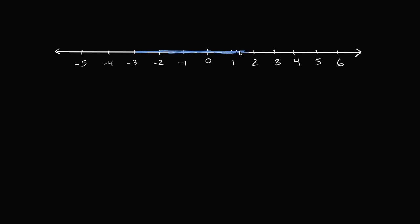In order to be more precise, I have to be clear: am I including negative three and two, or am I not including them, or maybe just including one of them? If I'm including negative three and two, then I would fill them in. Filling in negative three and two means they are part of this interval. When you include the endpoints, this is called a closed interval. I can depict it on a number line by filling in the endpoints.